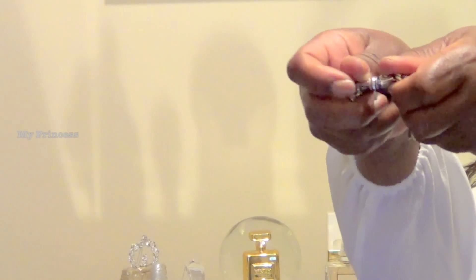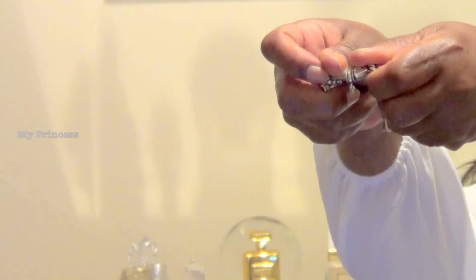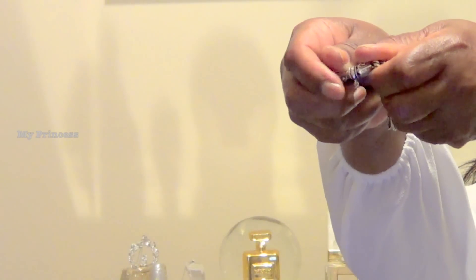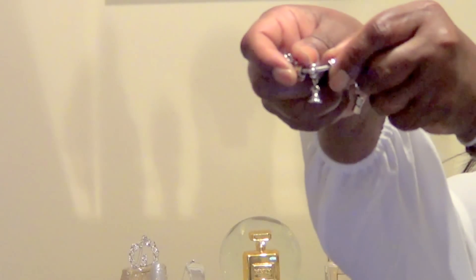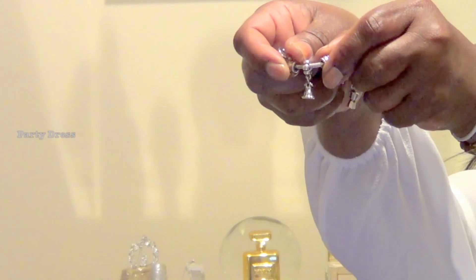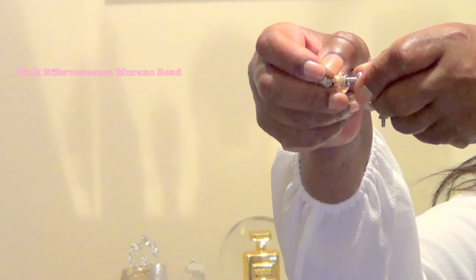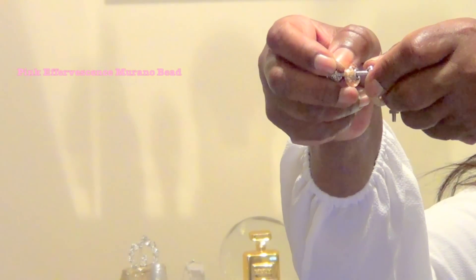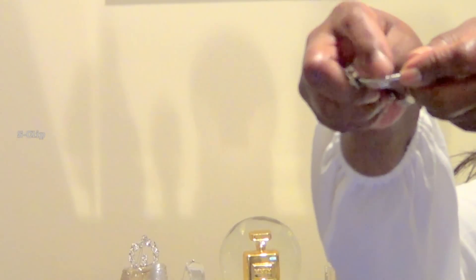This little piece right here is missing the tiara. It was called my princess. I'm keeping it on here because this is sterling silver. This is party dress. This is that beautiful pink effervescence murano bead. This is the S clip.